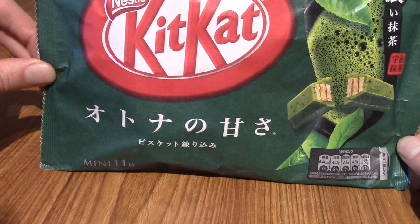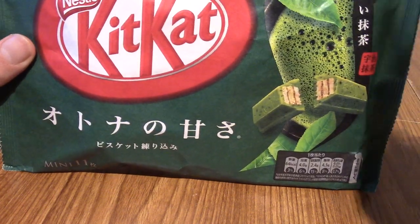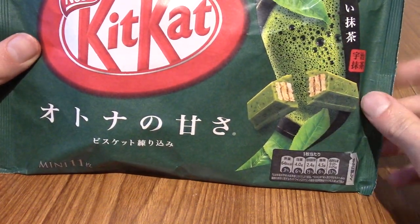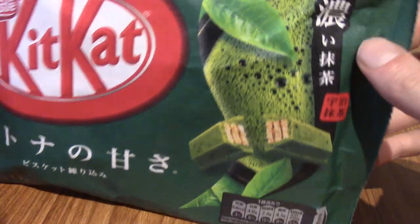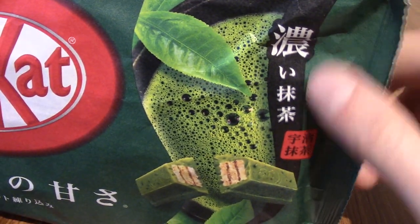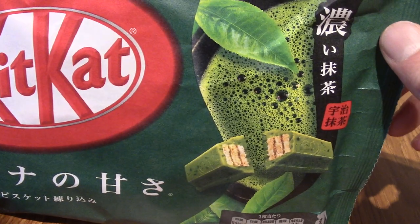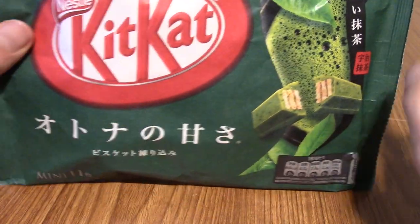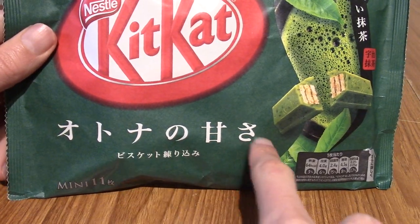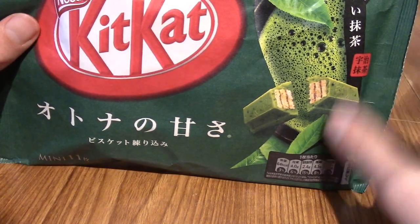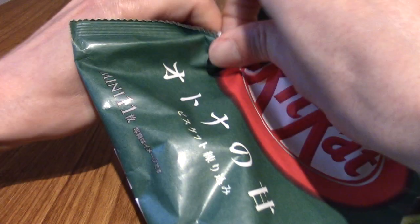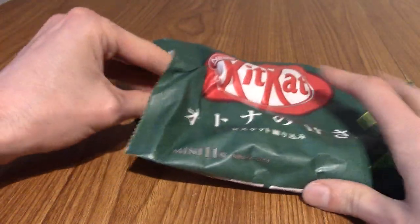All right, let's get into some Kit Kat. So this came in the Lucky Box, which didn't actually come with a pamphlet to explain everything. But according to Google Lens, this says Dark Matcha, which I am very excited for. I think that's something like adult taste or something, which is a weird phrase until you realize that Dark Matcha obviously is probably not a flavor big with children.